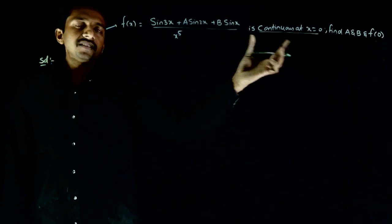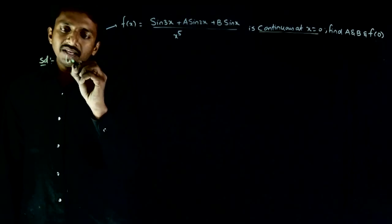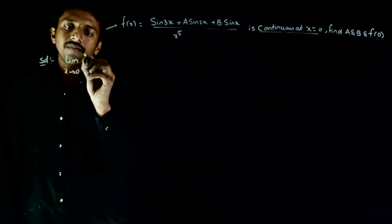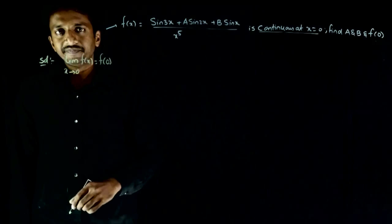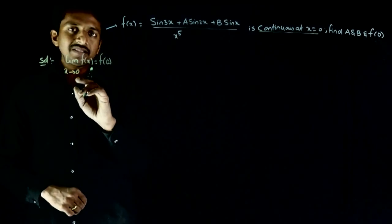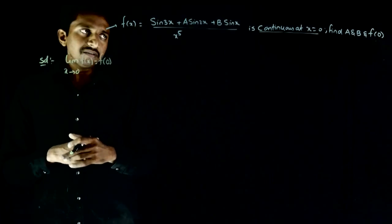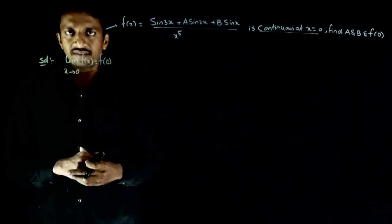First, it is given that this function is continuous at x equal to 0. So what condition should hold? Limit x tends to 0 of f(x) should be same as f(0). This is the condition which needs to be valid. I don't need to take 0 plus and 0 minus separately because this is not a piecewise function, this is a regular function. So I can directly find the limit.